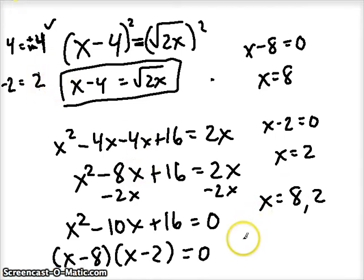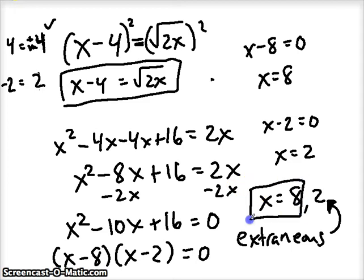So 2 is what is referred to as extraneous or false solution. Normally, we won't include it in our answers, and we would just say that x is 8. And sometimes you might be asked to include the extraneous, so then you would list it as 2. Let's try and do one more example here, using our powers.